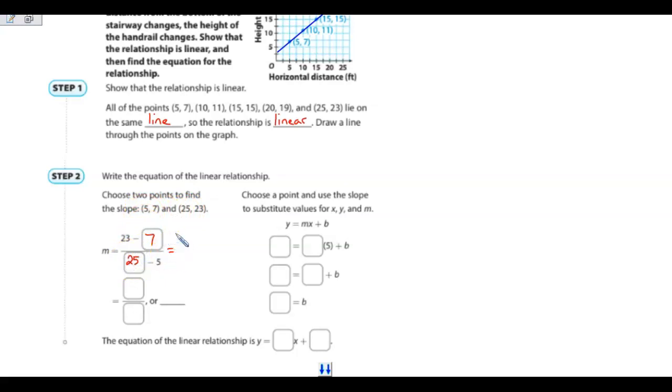Well, 23 minus 7 is 6, and 25 minus 5 is 20, and this can simplify down to 3 over 10, and so our slope is 3 over 10, or 3 tenths.